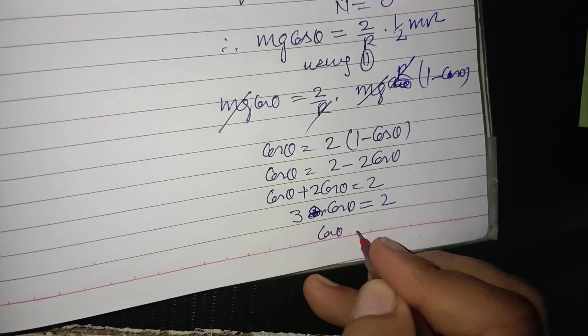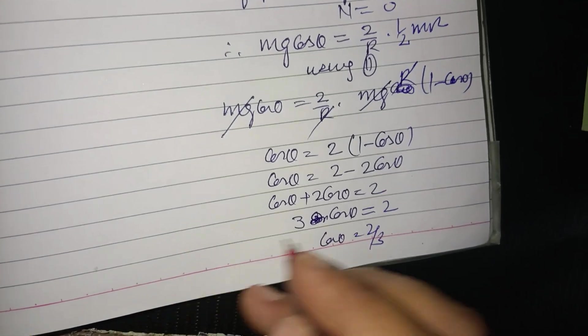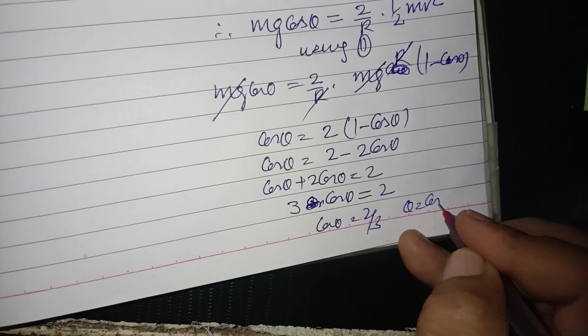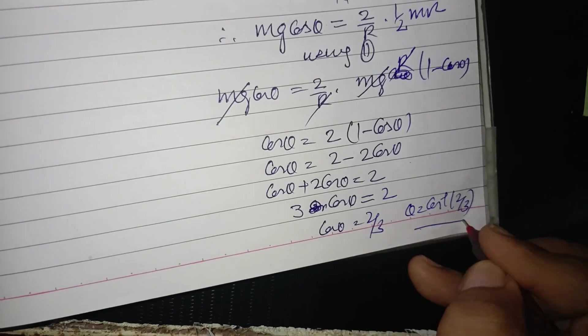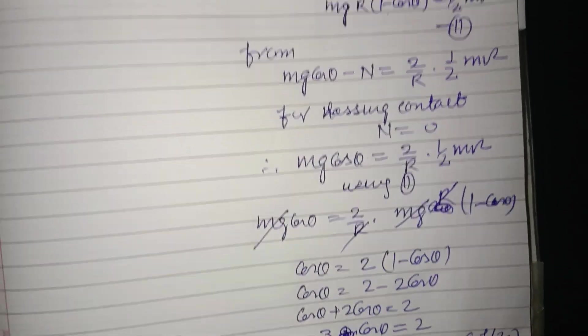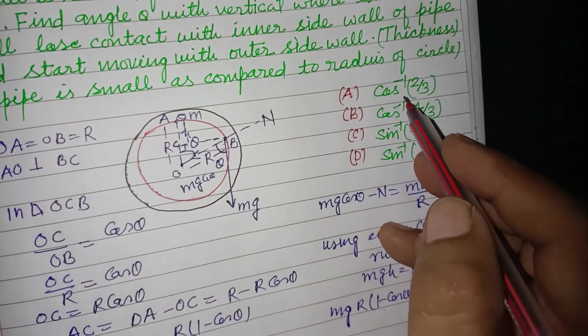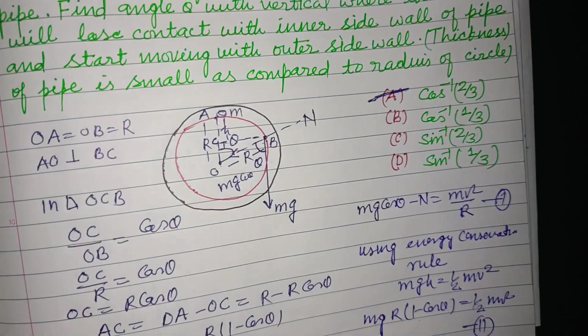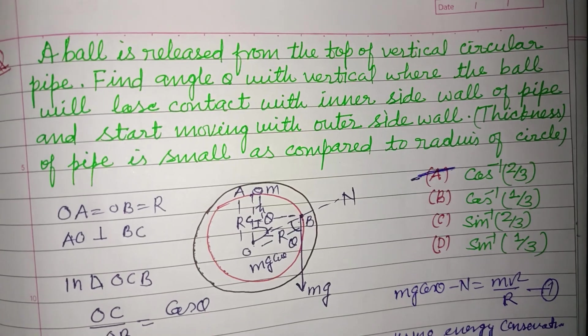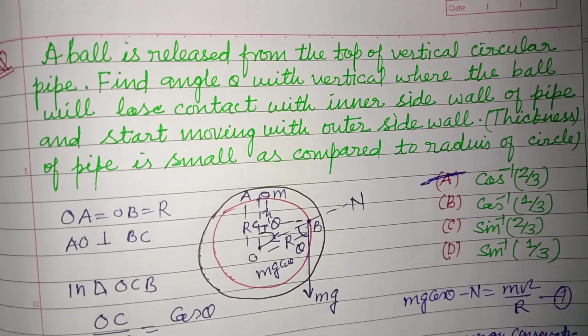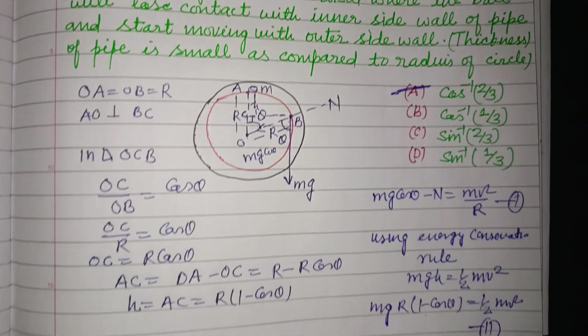3 cos theta equals 2, cos theta equals 2 by 3, or we write theta equals cos inverse 2 by 3. So theta equals cos inverse 2 by 3, the correct answer which is found in option A. So option A is correct. I hope you got it. Please like the video, subscribe the channel. Thanks for watching.